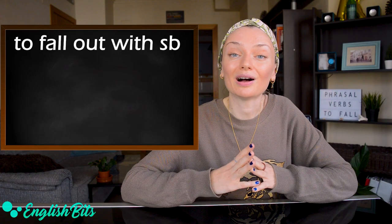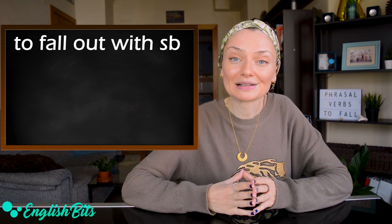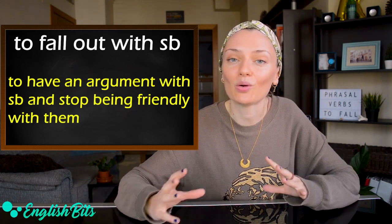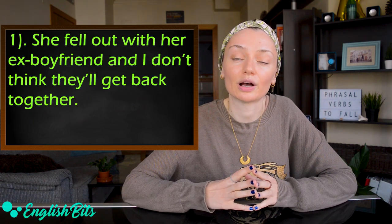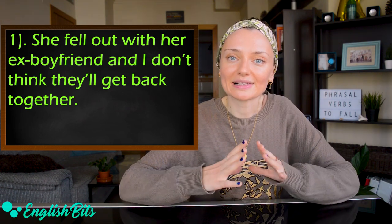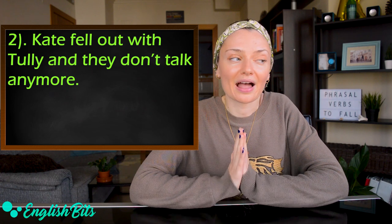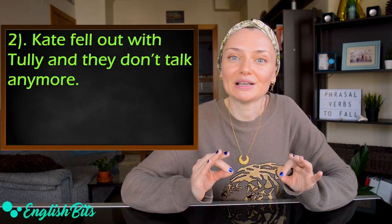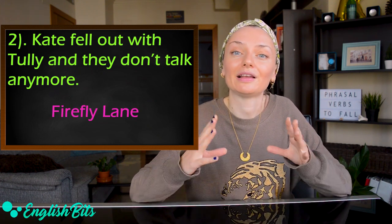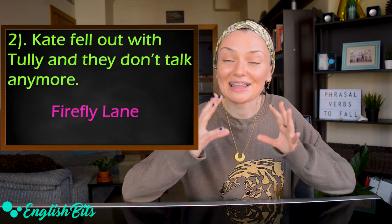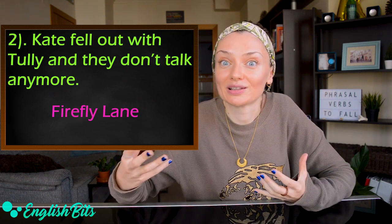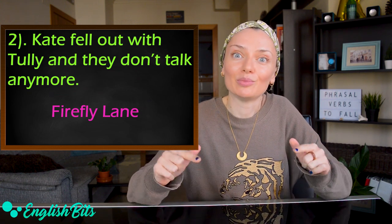Number nine, to fall out with someone. It means to have an argument with someone and to stop being friendly with them. For example, she fell out with her ex-boyfriend and I don't think they'll get back together. And the second example: Kate fell out with Tully and they don't talk anymore. This example is based on the series I've watched recently and loved. It's called Firefly Lane and I can't wait to see the second season and find out what happened and why Kate fell out with Tully. If you want to watch it, it's available on Netflix.